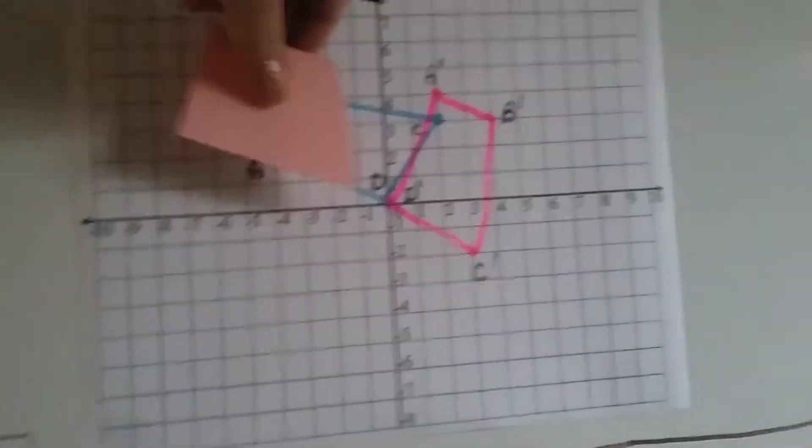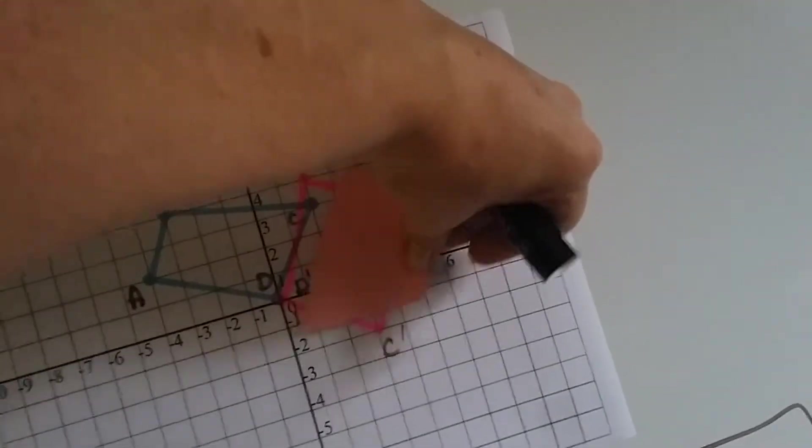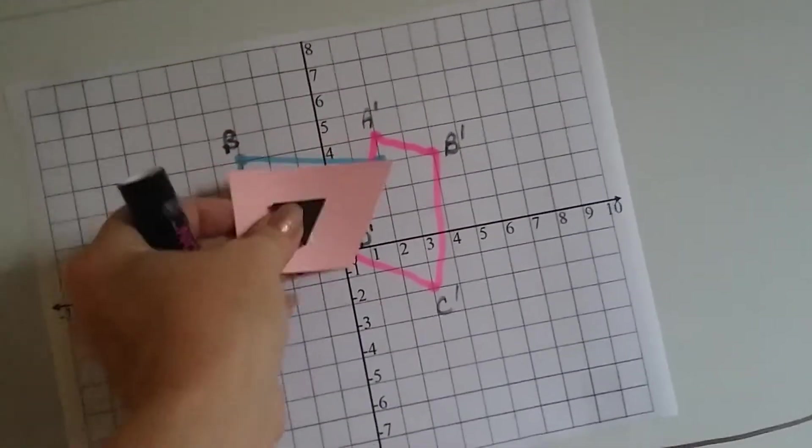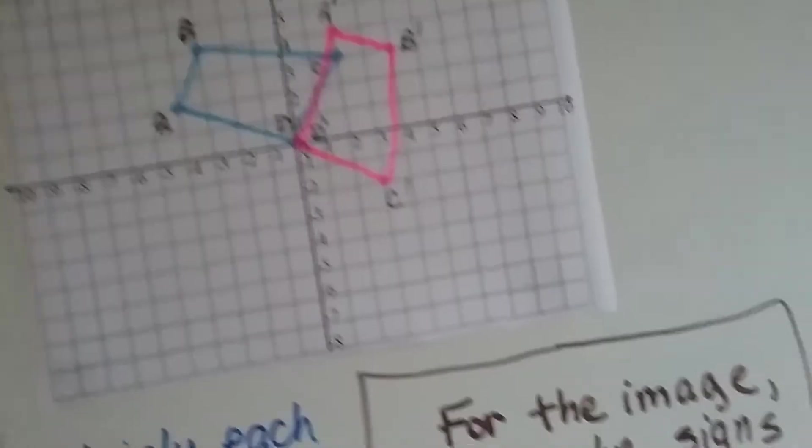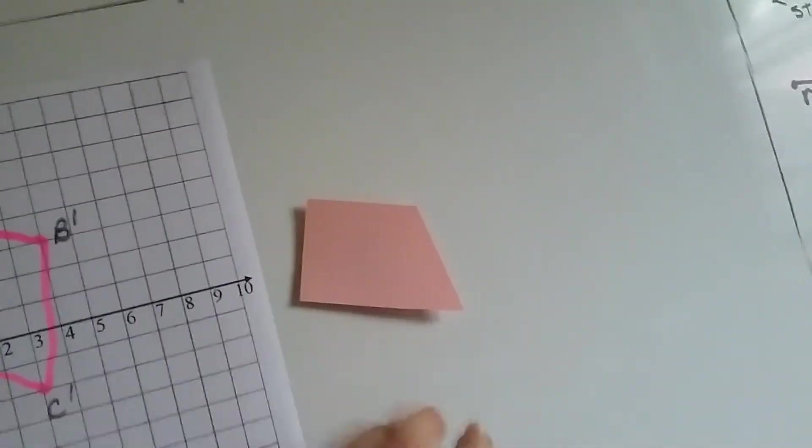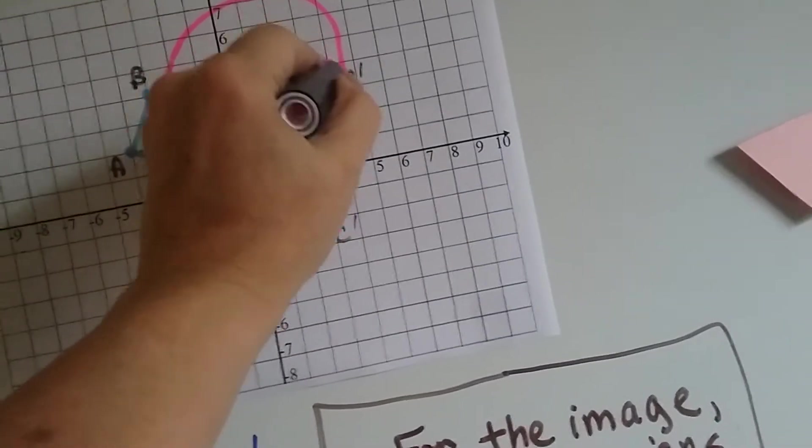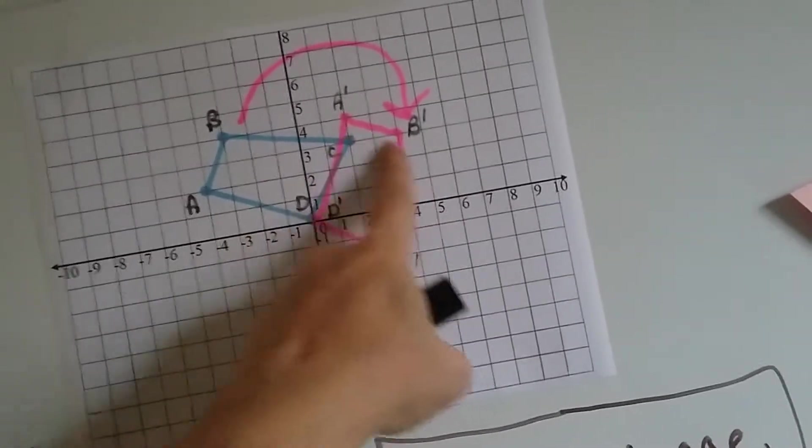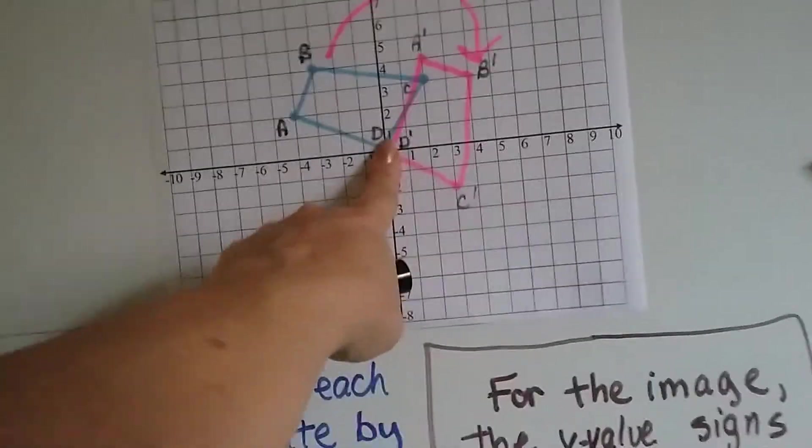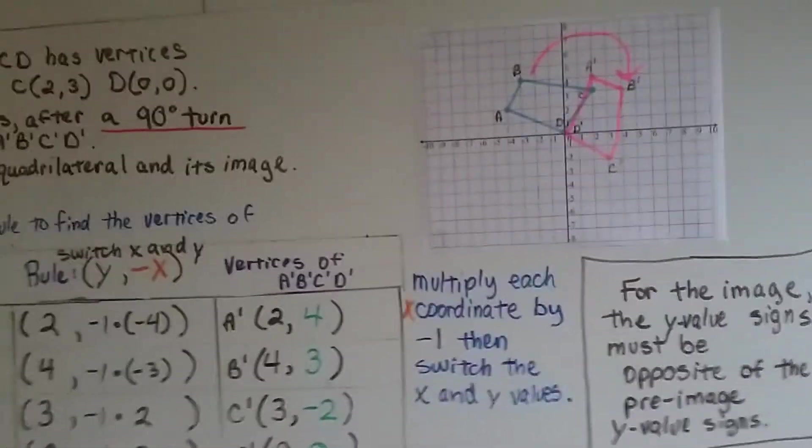So if this was our quadrilateral, like right here, it rotated around that way. Really, it's more like this kind of shape, and it rotated around this way. That's how it rotated, it just kind of spun like that. It came around. This B is now over here, and the A is over here, and this C is now over here. But the D stayed the same because that's the center of rotation. D was our center of rotation.